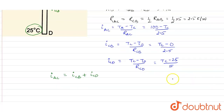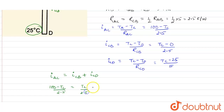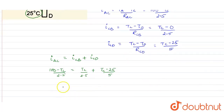Substituting the respective values: (100 − Tc) / 2.5 = Tc / 2.5 + (Tc − 25) / 5. Solving this equation, we get Tc = 45°C. So the temperature at junction point C is 45°C.